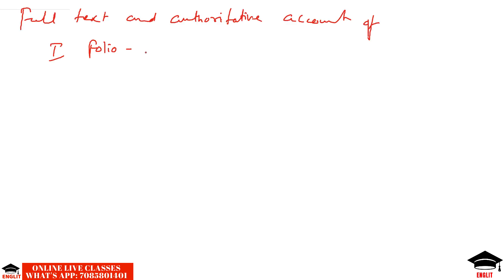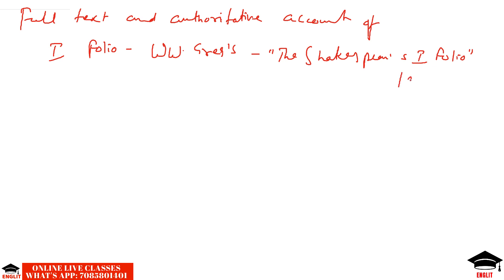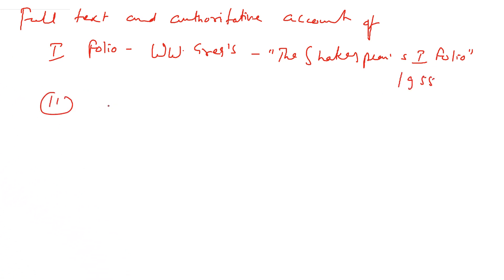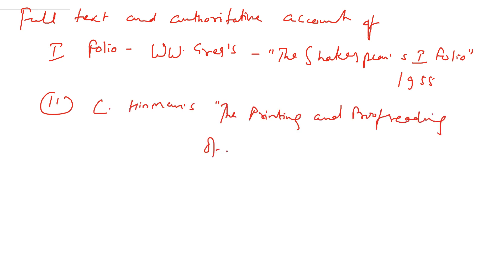Regarding the full text and authoritative accounts of the First Folio, there are two most reliable editions: W.W. Greg's Shakespeare's First Folio, published in 1955, and C. Hinman's The Printing and Proofreading of the First Folio of Shakespeare, published in 1996.